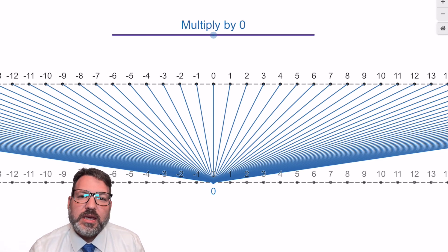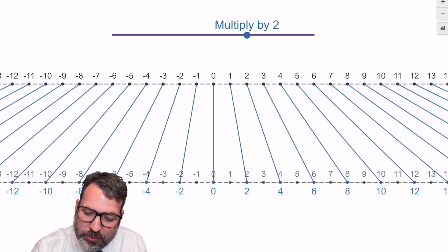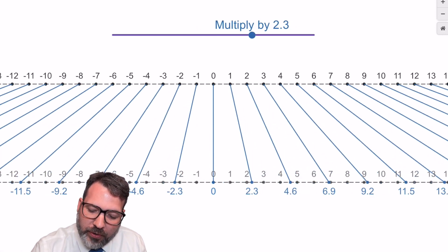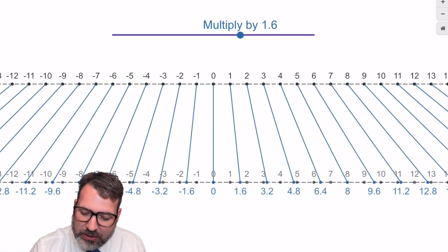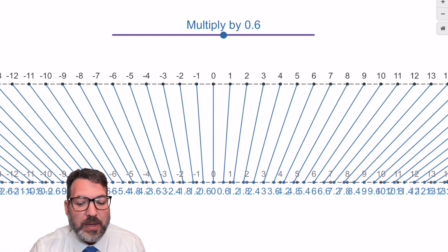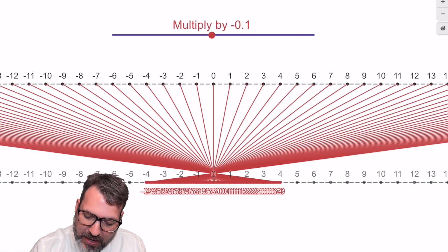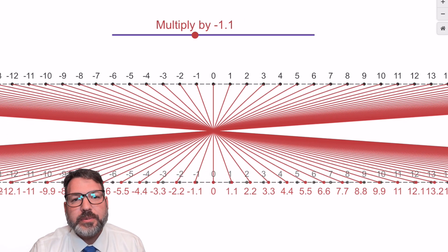This is also the key. You can tell what's going to happen next as I continue to move this slider further and further to the left, as I make my scalar smaller and smaller, not just to the point where it becomes 0, but actually to go even beyond that into the negatives, the entire number line flips around.